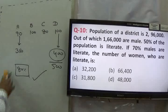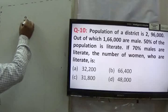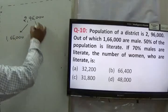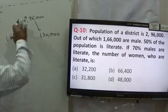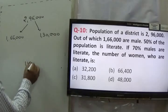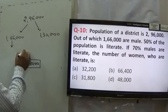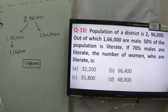Statement number 10. The population of a district is 2,96,000, out of which 1,60,000 were males, so females are 1,36,000. 50% of the population is literate, meaning 1,48,000 are literate. 70% of males are literate, so 70% of 1,60,000 = 1,12,000 males are literate. That means 30% of males — that is 48,000 — are illiterate. And 30% of females calculation gives us the literate female count.